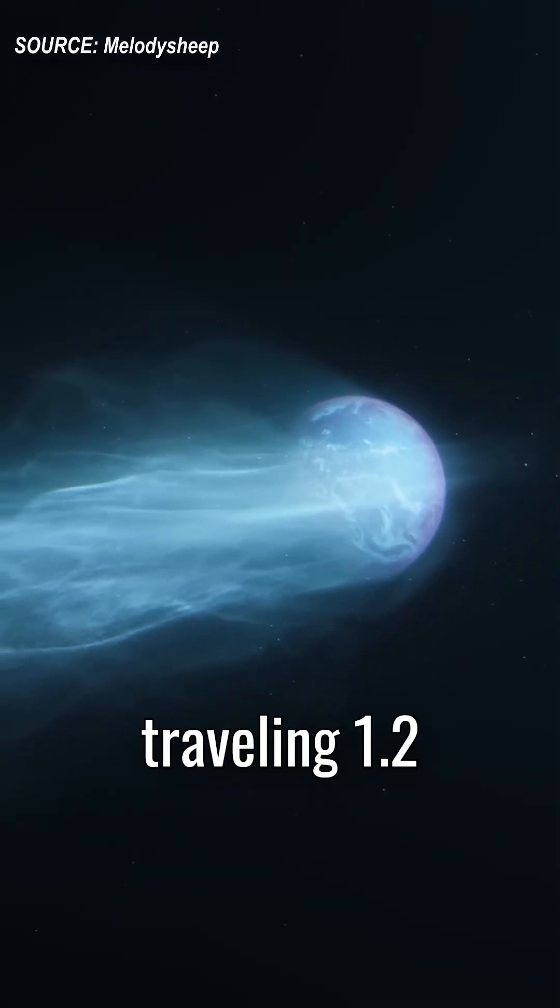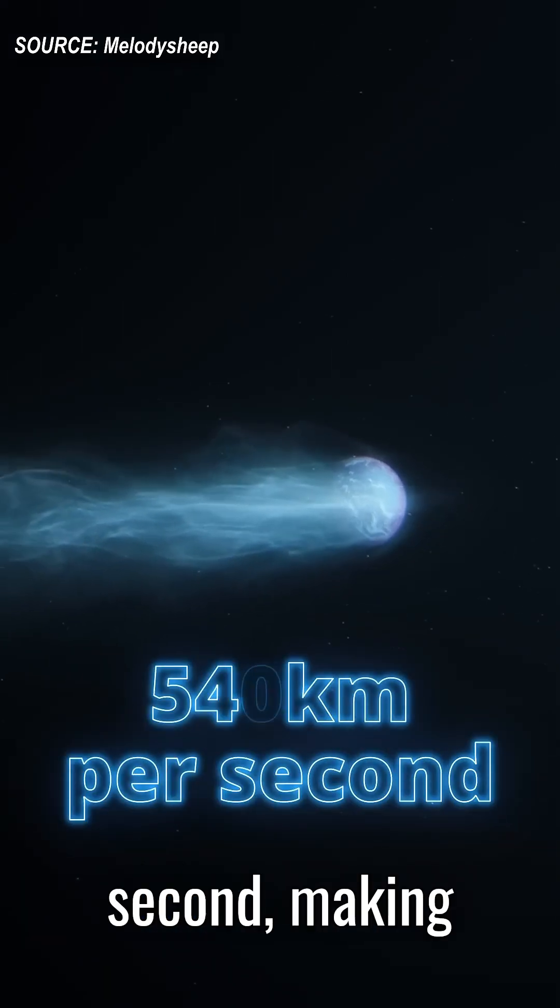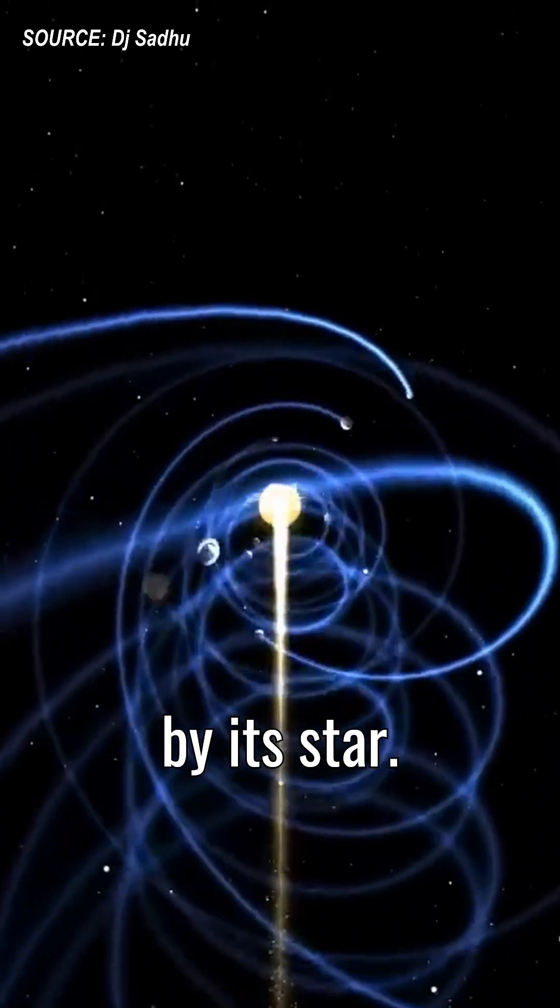Scientists have discovered an exoplanet traveling 1.2 million miles per hour, or 540 kilometers per second, making it the fastest exoplanet ever recorded. And it's being dragged along by its star.